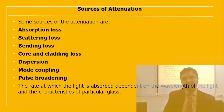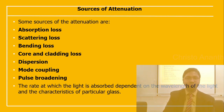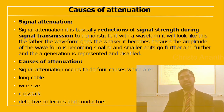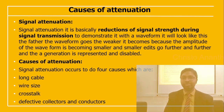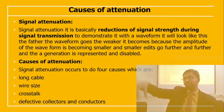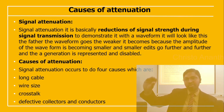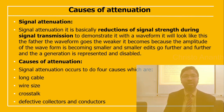The rate at which light is absorbed depends on its wavelength and the characteristics of the particular glass used. Signal attenuation is the reduction of signal strength during transmission. The farther the signal travels, the weaker it becomes — the amplitude of the waveform grows smaller and smaller until it degrades.